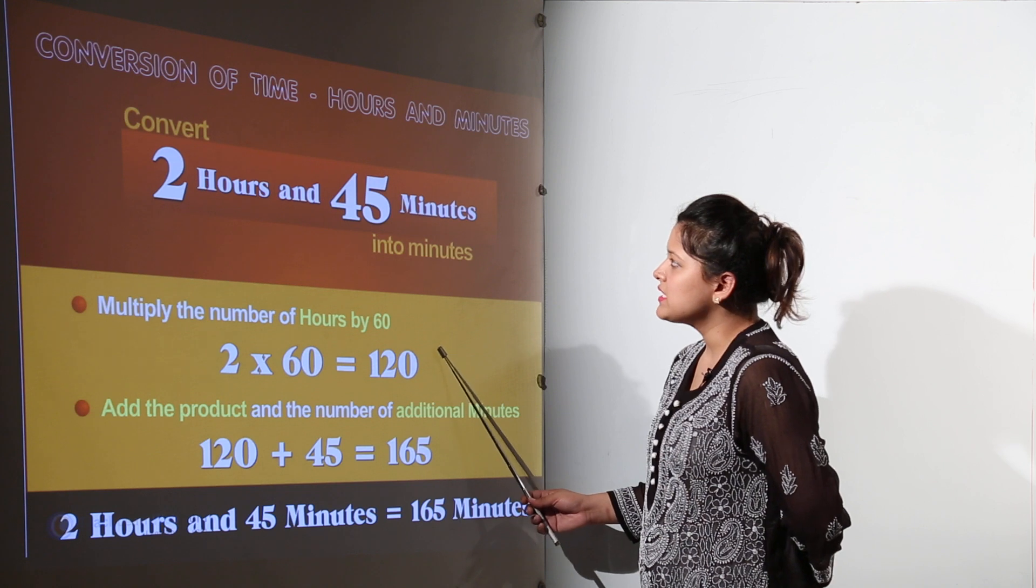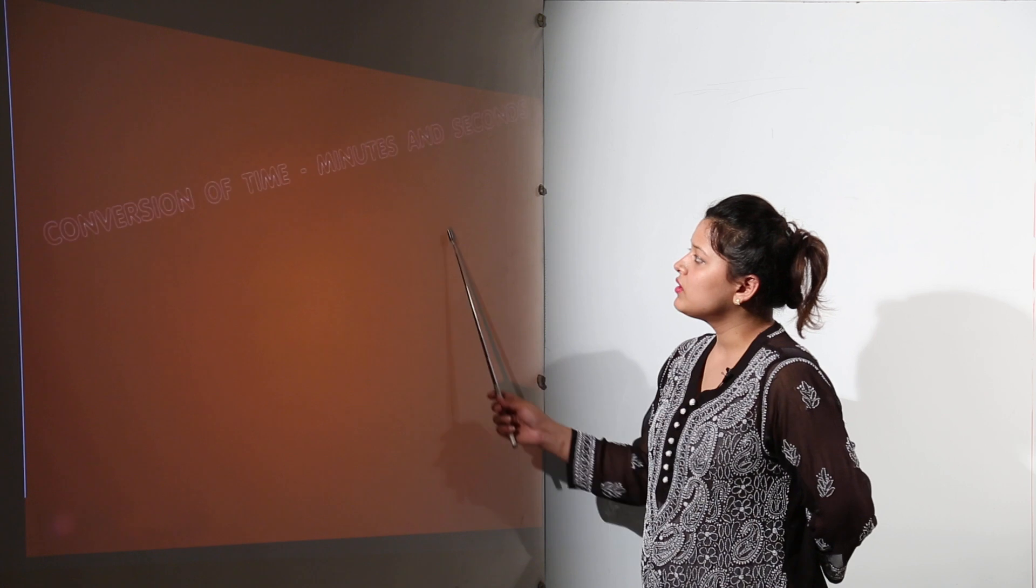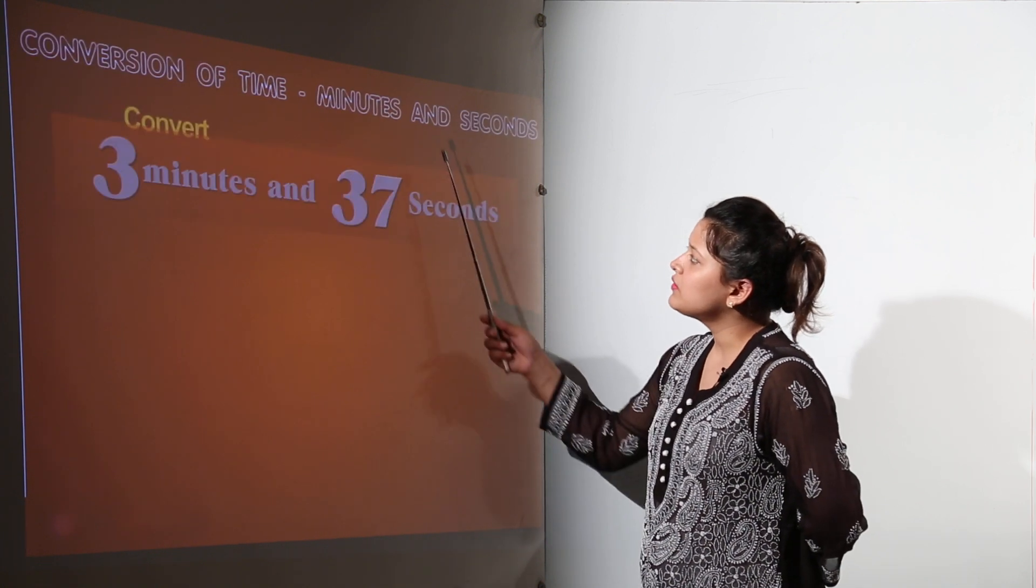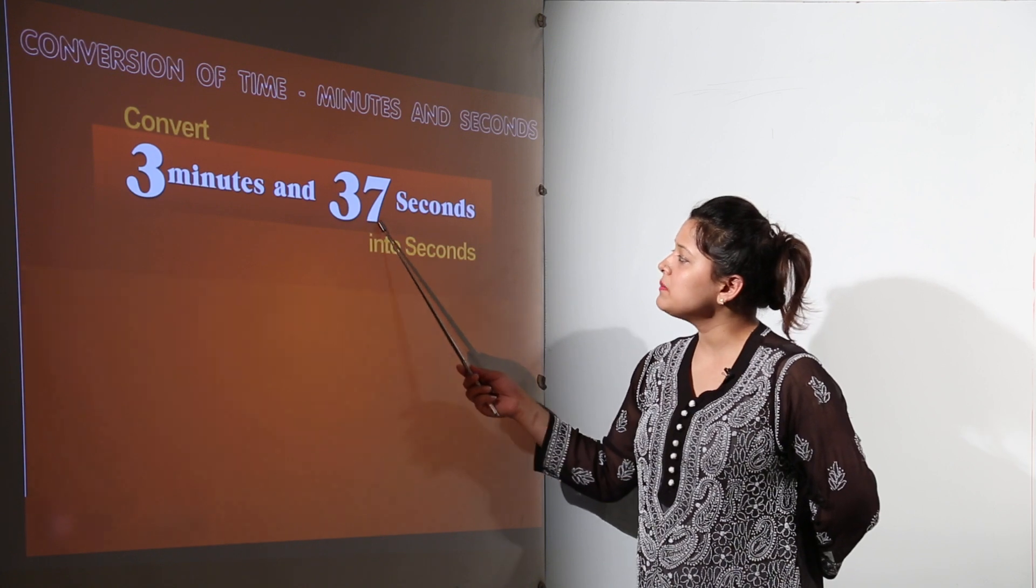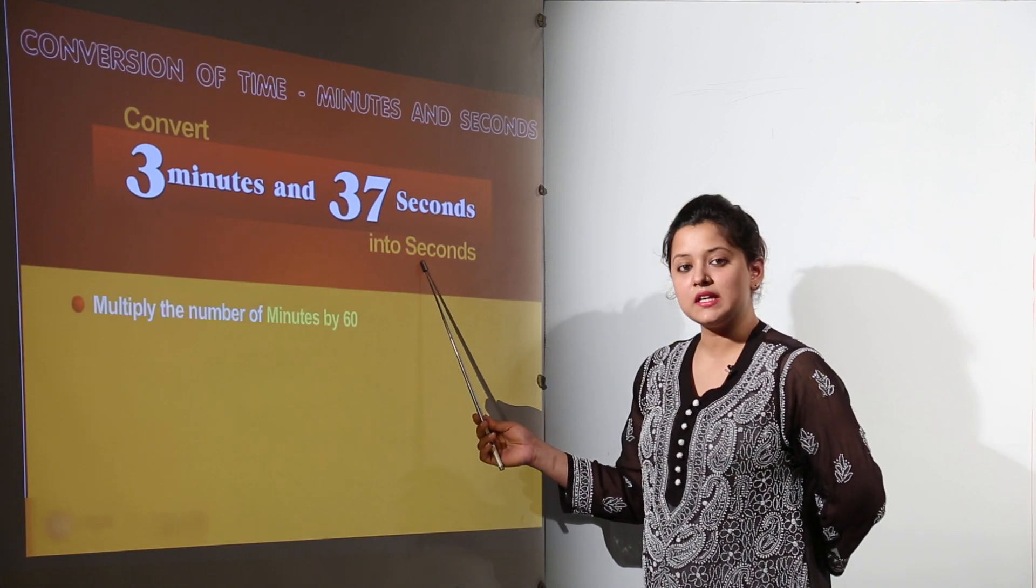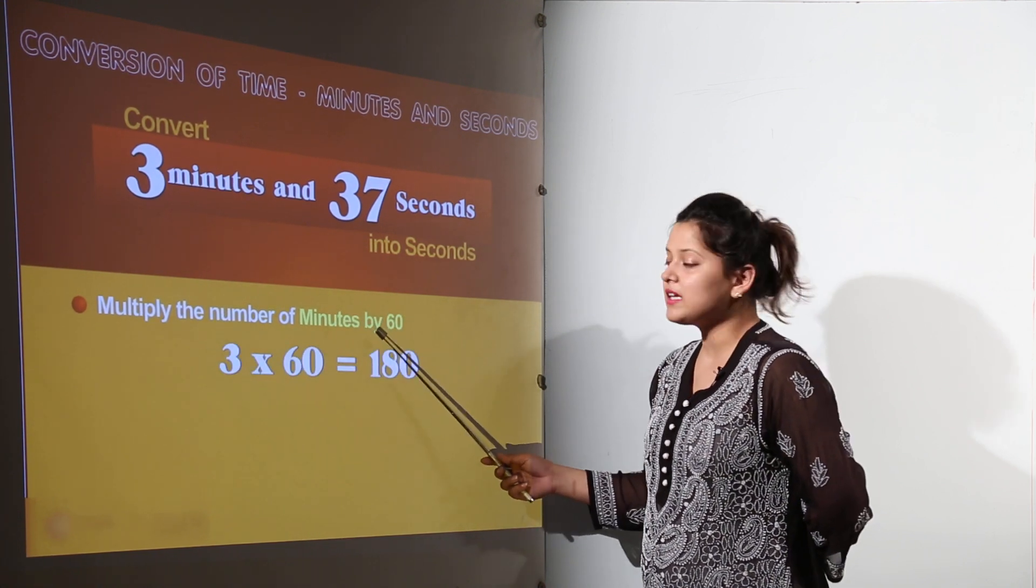Next question would be again the conversion one only. The next conversion would be for this case. Here we have the conversion of minutes and seconds, that is converting 3 minutes and 37 seconds into seconds. We will be converting the minutes to seconds. 1 minute has 60 seconds.